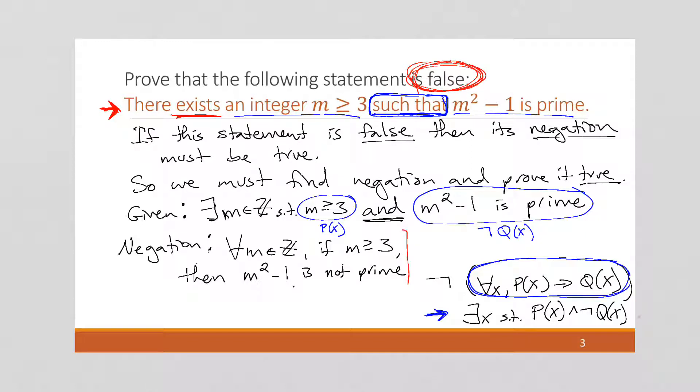Okay, so this negation is what we're going to now prove true. Right, and again, let's go back through that. The statement that we were given is false. If the statement is false, its negation must be true. So we found the negation, and now we're going to prove that true.